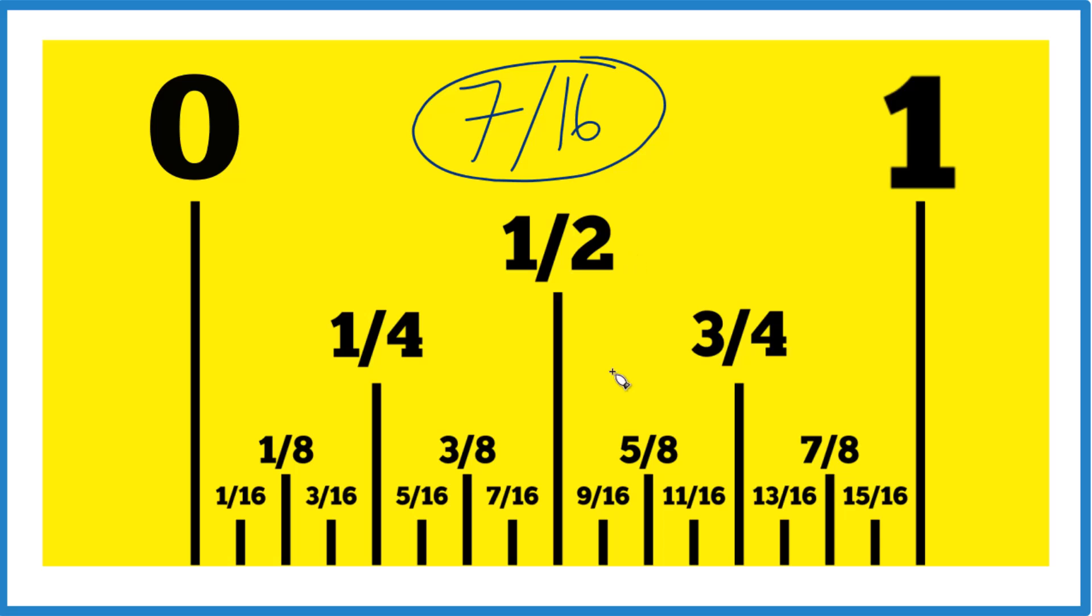So if we cut the whole thing in half, we end up with 1 half. If we take that half there, cut that in half, we get 1 fourth. Do it again. Here's 1 fourth, cut it in half, and you get 1 eighth.